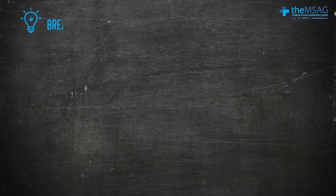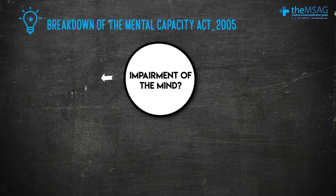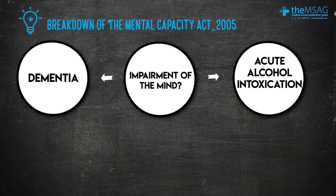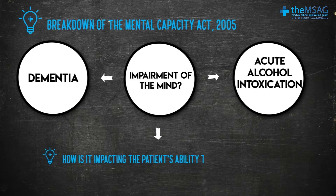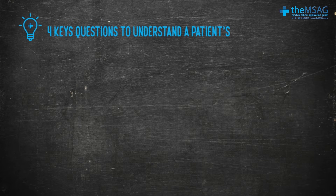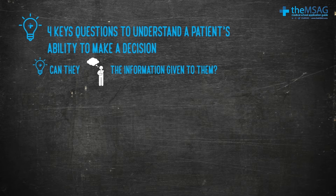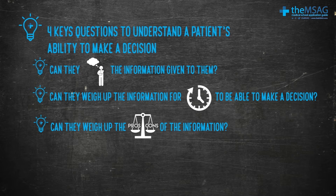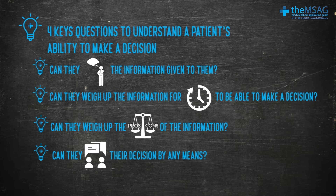Let's break that down for everyday medical practice. First, we need to find out if there's an impairment of the mind — this could be anything from dementia to acute alcohol intoxication, among many other things. Once we've established that there may be an issue, we need to find out how it's impacting the patient's ability to make the decision. This can be broken down into four key questions: Can they understand the information given to them? Can they retain the information long enough to make a decision? Can they weigh up the pros and cons? And can they communicate their decision by any means?